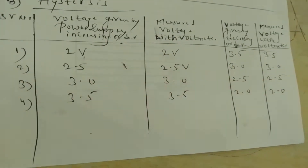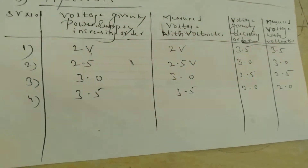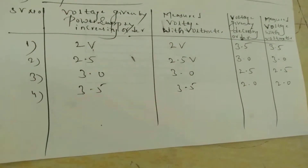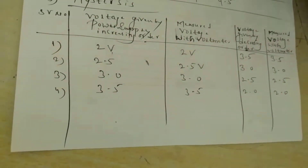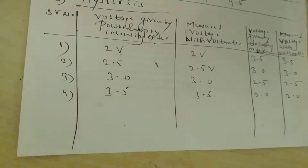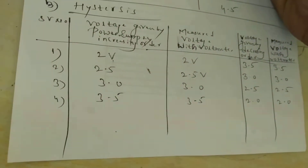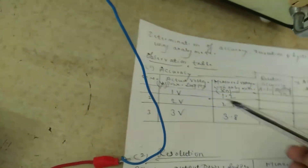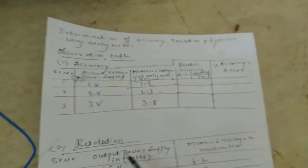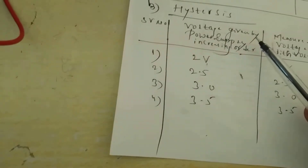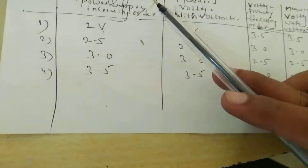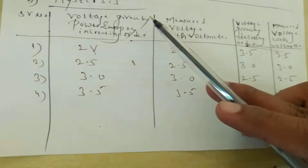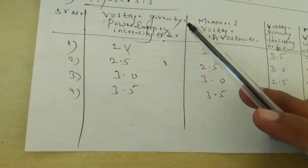This is the practical for determination of accuracy, resolution, and hysteresis. Accuracy is the closeness to the true value or standard value. Resolution is the smallest change in the input. Hysteresis is determined by increasing and decreasing in uniform steps.